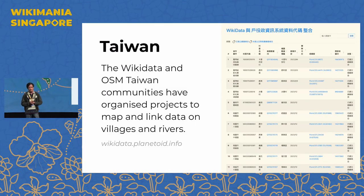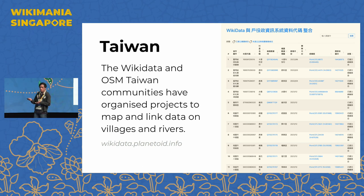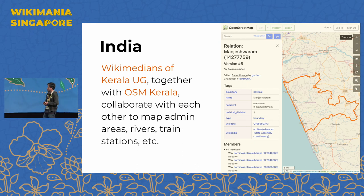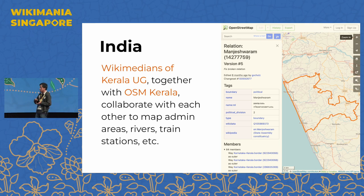Here are some examples of projects and initiatives that communities are using to link OpenStreetMap and Wikidata together. My colleague Dennis from Taiwan hosts monthly meetups for Wikidata and OpenStreetMap, and one of their ongoing projects is to map and link data on villages, rivers, and cemeteries. Their tool helps track which villages in Taiwan have already been mapped and linked between OpenStreetMap and Wikidata. Our colleagues in India — specifically the Wikimedians of Kerala user group together with OpenStreetMap Kerala — collaborate to map administrative areas, rivers, and train stations.